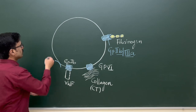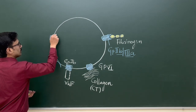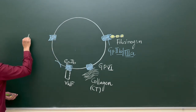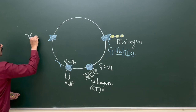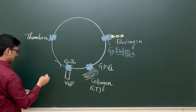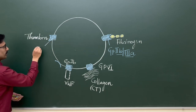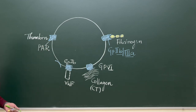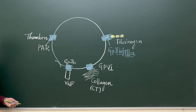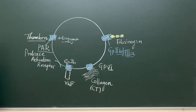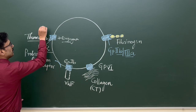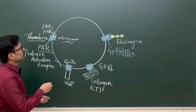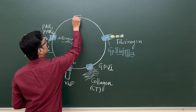There is another receptor that can bind to activated thrombin. These receptors are named PAR — Protease Activated Receptor. There are two types of PAR activated by thrombin: PAR1 and PAR4.